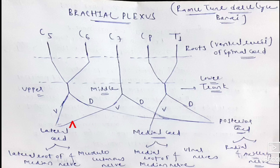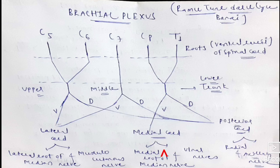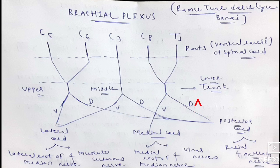To summarize: the lateral cord gives the lateral root of the median nerve and the musculocutaneous nerve; the medial cord gives the medial root of the median nerve and the ulnar nerve; and the posterior cord gives the radial nerve and the axillary nerve. That covers today's lecture on the brachial plexus. Thanks for watching — have a nice day!